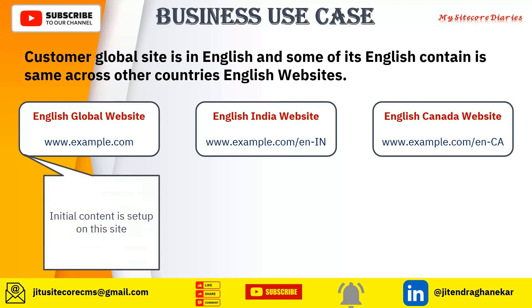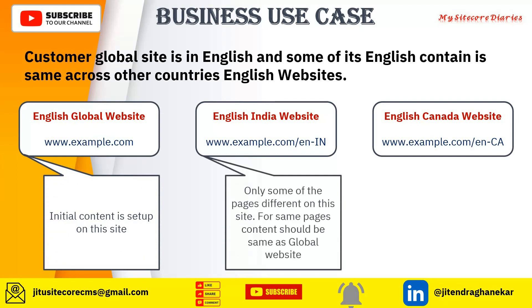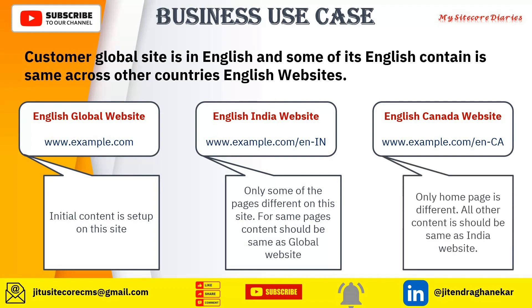The initial content is set up in the global website — that is the EN website. For some pages, the content should come from the global website for the India website. Whereas for the Canada website, only the homepage is different; other content should come from the India website. So this is our business use case — how will we use language fallback?